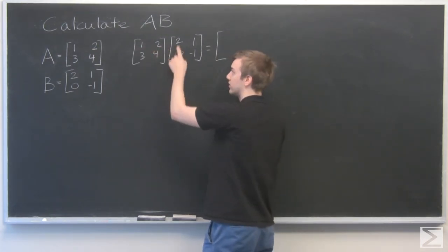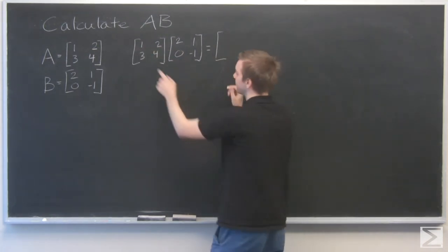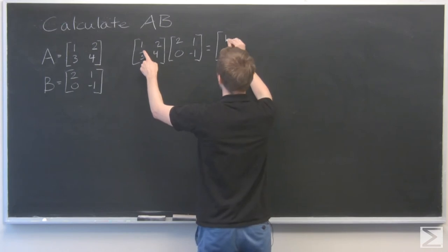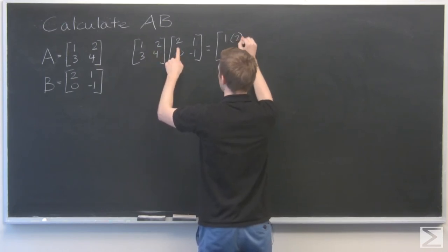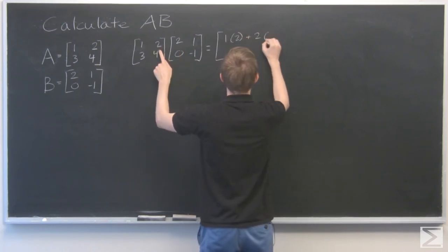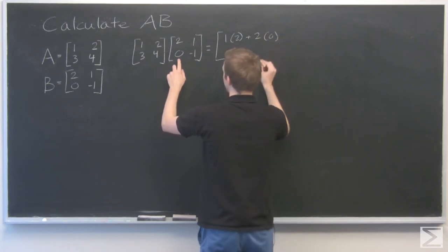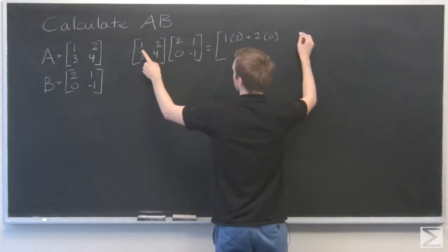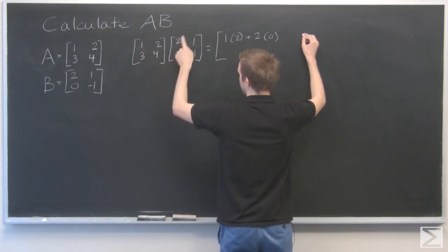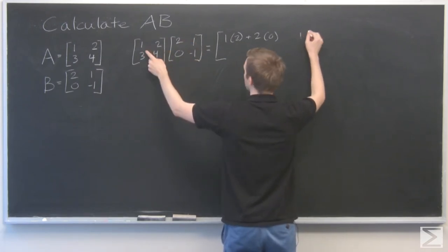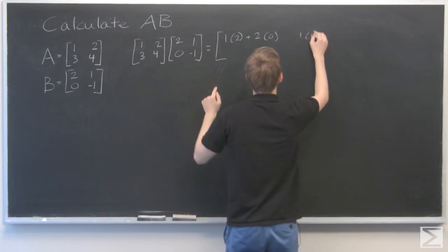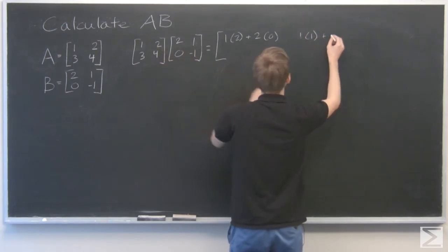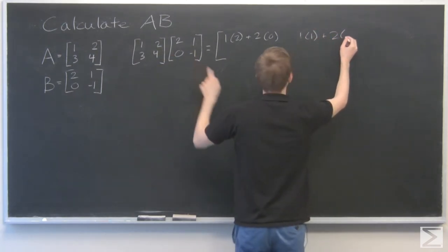So we'll start by multiplying the first row by the first column, and that will go in the first index. So 1 times 2 plus 2 times 0. Now first row, second column: 1 times 1 plus 2 times minus 1.